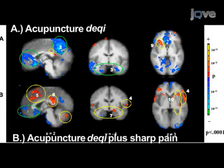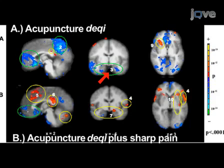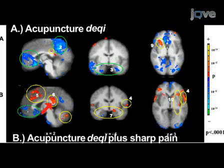Here we see the correlation between the psychophysical and hemodynamic response. This graph represents acupuncture de-chi compared to de-chi plus sharp pain. The prominent deactivation of the medial prefrontal cortex, medial parietal cortex, and medial temporal lobe seen with de-chi absent pain was attenuated in the presence of pain. With pain, activation of the sensory motor and association cortices became more prominent, and a subset of limbic regions such as the middle cingulate supplemental motor area, posterior cingulate BA23, amygdala, and cerebellar vermis became activated.